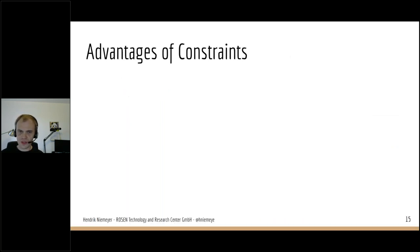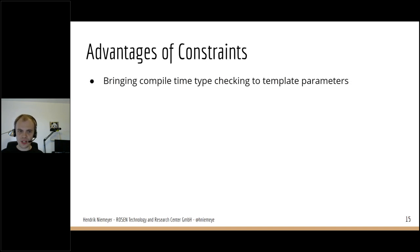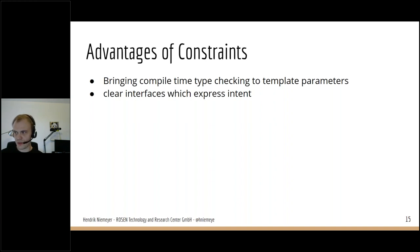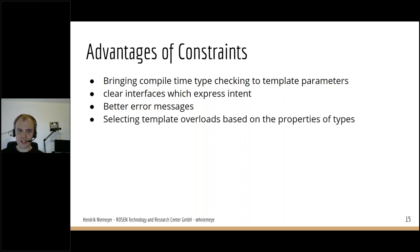The advantages of using constraints and concepts: we get compile-time type checking for template parameters instead of letting the template fail somewhere in the function body. We can define clear interfaces that express our intent to users, we get better error messages, and we can also control the template overload process based on properties of types.